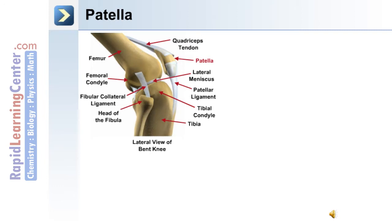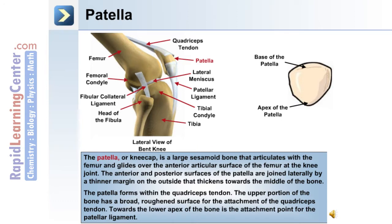The next bone we'll discuss is the patella or kneecap, shown here in this lateral view of a bent knee. The patella forms in the quadriceps tendon and is also attached to the patellar ligament. The patella contains a base as well as an apex. The patella is a large sesamoid bone that articulates with the femur and glides over the anterior articular surface of the femur. The anterior and posterior surfaces of the patella are joined laterally by a thinner margin on the outside that thickens towards the middle of the bone.